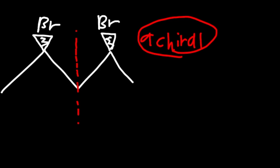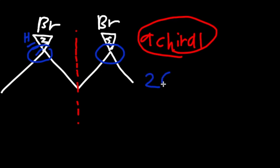Now let's determine if it has chiral centers. Starting with the carbon bearing Br, you can see there are four different things attached — one, two, three, and four. So this is in fact a chiral center, and the same applies to the other carbon. So we have two chiral centers in this example.